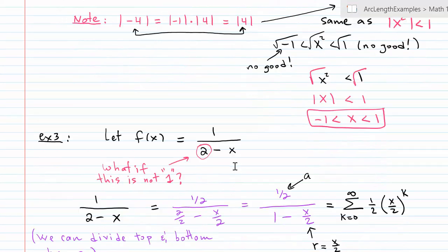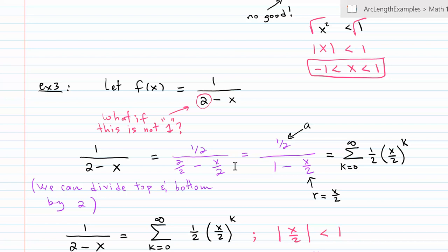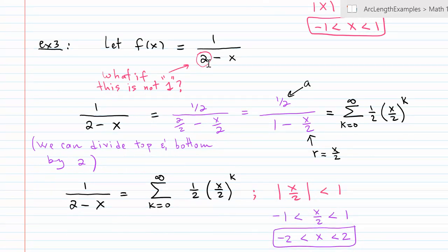In my next example, I'm now choosing a fraction where the bottom left number is not 1. So how do we go about fixing that? Well, one way to do this is to divide everything by that number. So I'm dividing everything by 2, top and bottom. So when I do this, it forces the bottom left number to become a 1, but it also changes my r and it also changes the top number. So once I identify that a is a half and r is x over 2, which I have to keep in parentheses to the power of k.